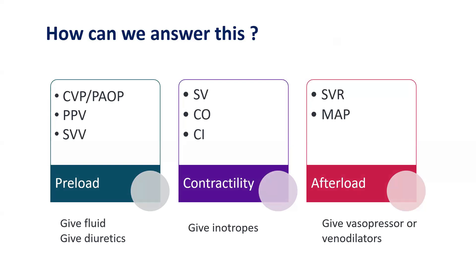Preload can be determined by static variables like central venous pressure or pulmonary artery occlusion pressure, or dynamic variables like pulse pressure variation and stroke volume variation. Cardiac contractility can be determined by thermodilution or pulse contour analysis devices, which provide stroke volume, cardiac output, cardiac index, and several other parameters.